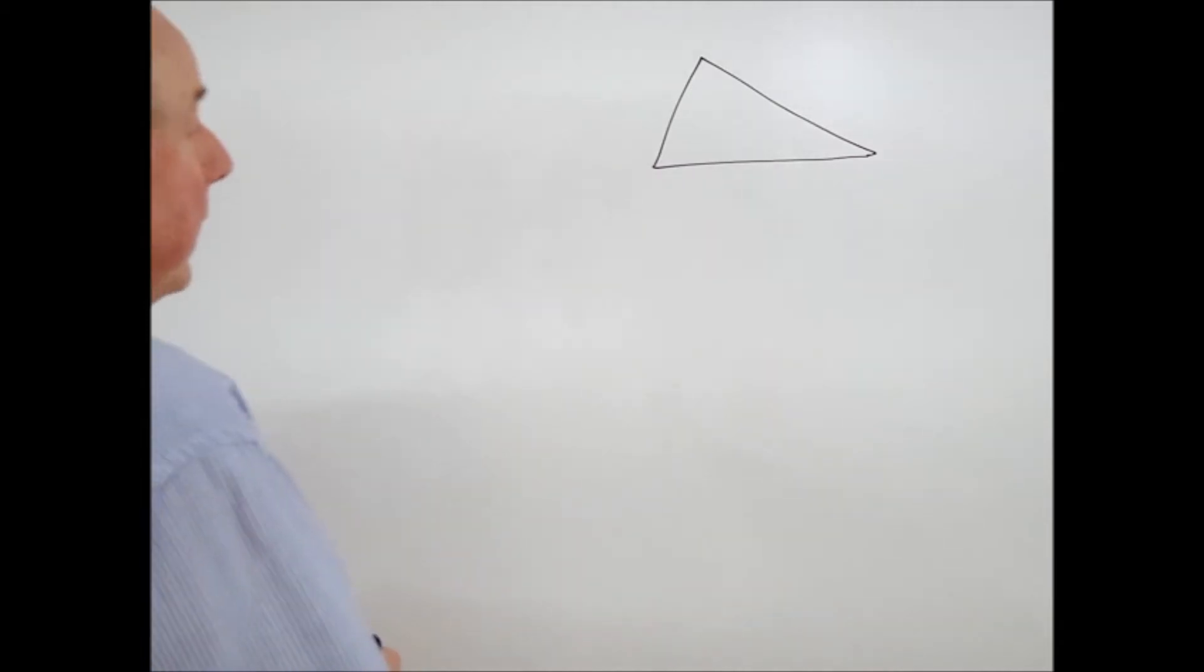In this question we're given a triangle with three sides. This is a scalene triangle, it has no particular shape, it's not an isosceles triangle, it's not equilateral, and it's not necessarily a right angle triangle.